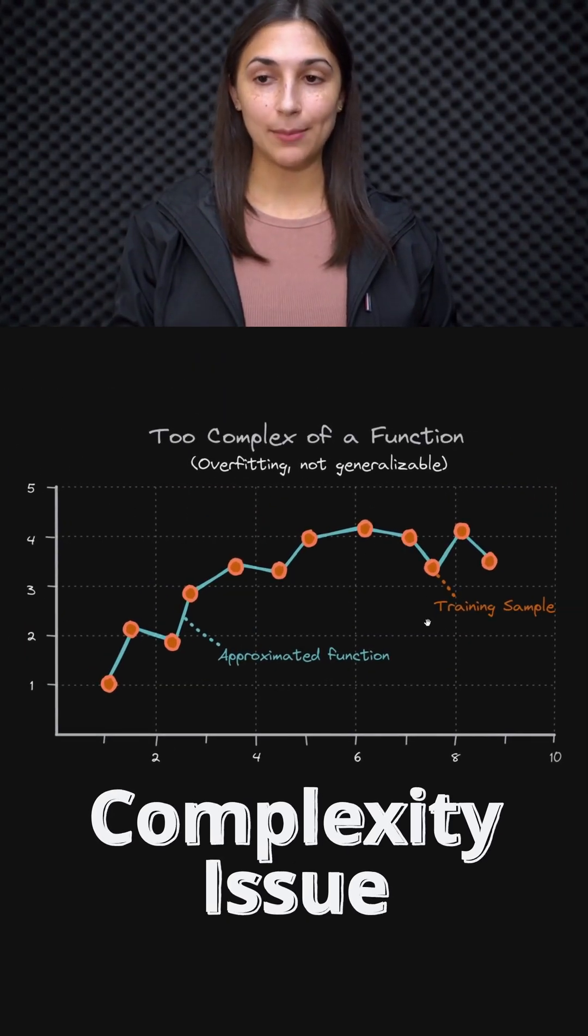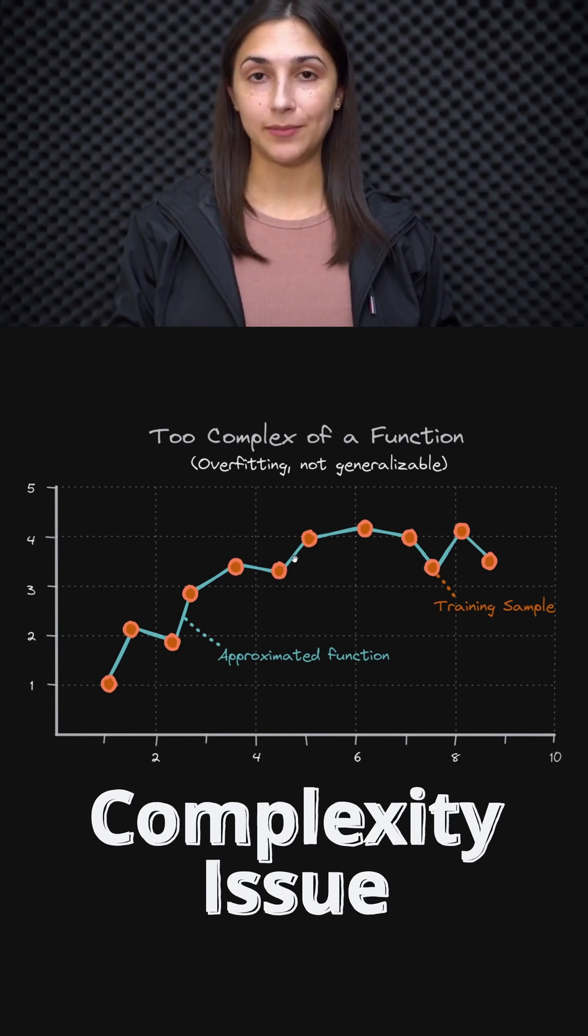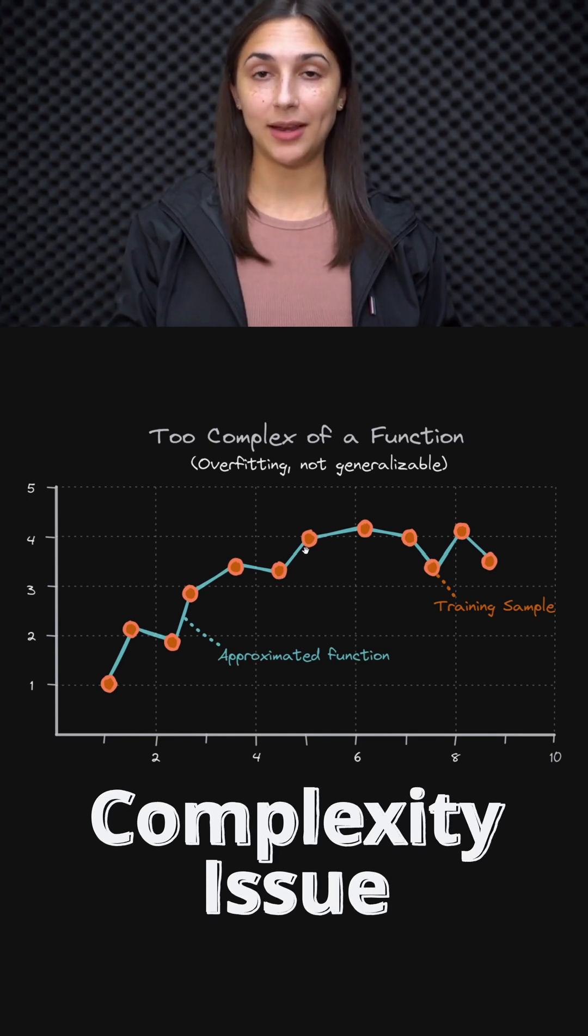Imagine that each of these orange points are samples in our training set, and in blue here we have the approximated function from our network to fit this training set. As we can see, this function is fitting the dataset perfectly by capturing all the points and not deviating away from any of them.